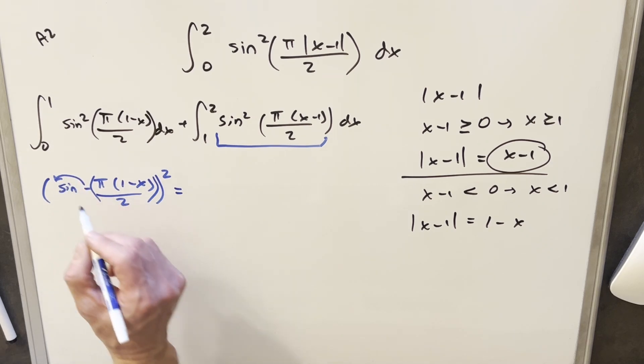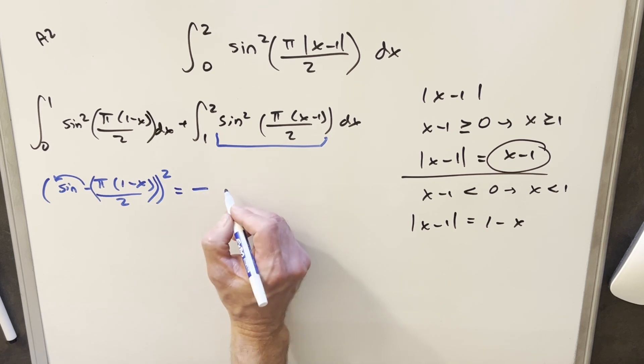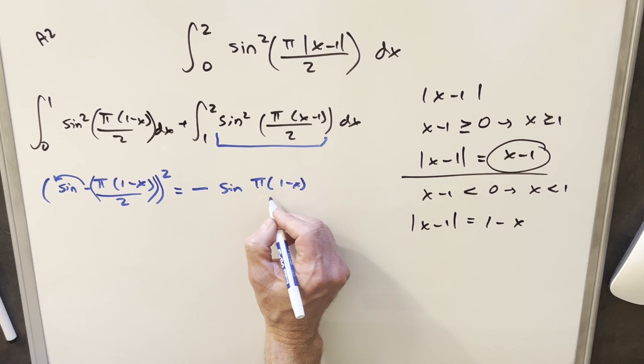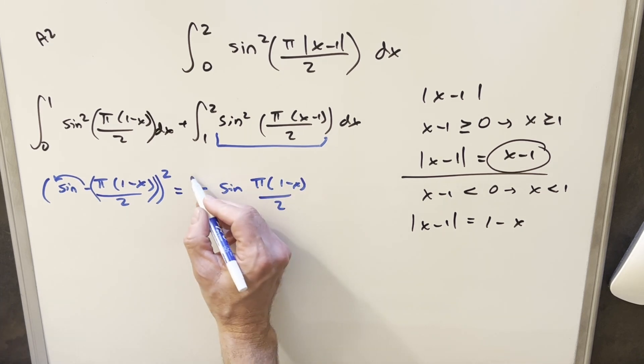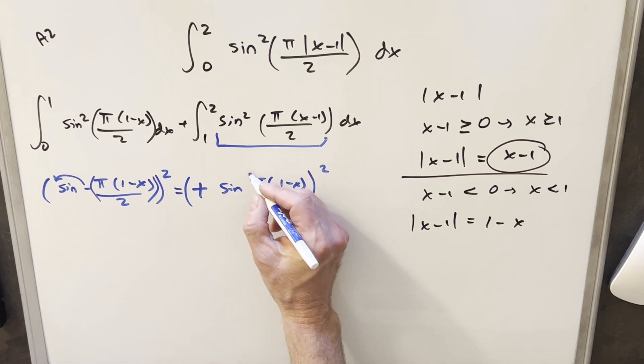But then, now what we have is we've got a minus sign on the angle of sine, but sine's an odd function. So because sine's an odd function, I can just bring the minus in front of the whole thing, and I can write this as minus sine of pi 1 minus x over 2. And this whole thing is squared. But now, because we have a minus sign and we're squaring the whole thing, that's minus 1 squared, which is just 1. So this minus sign can just go away, and we're just left with this.